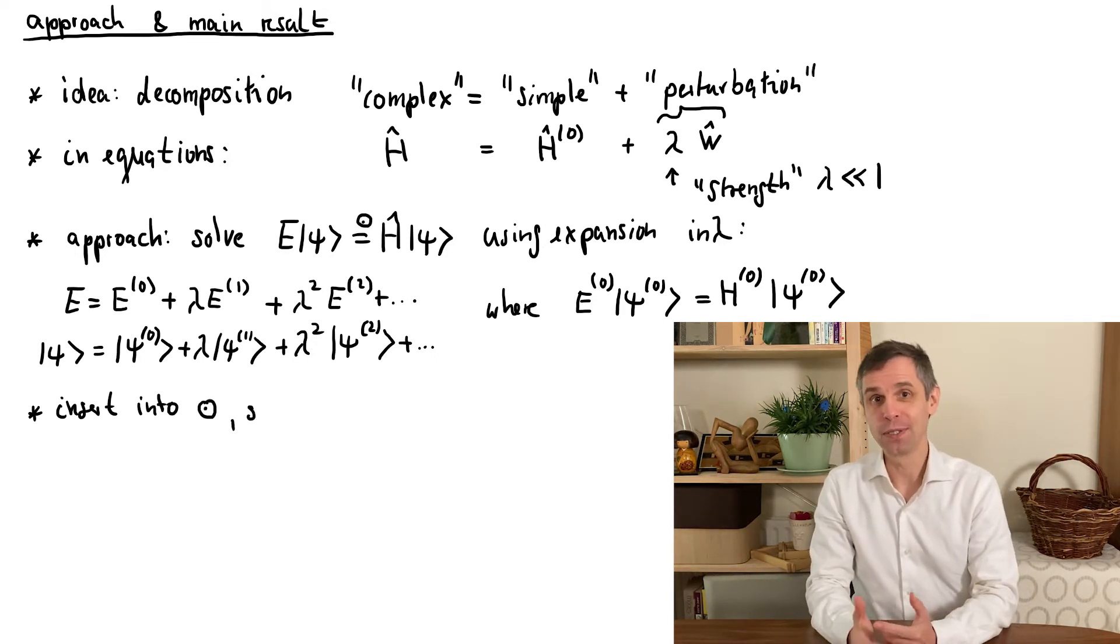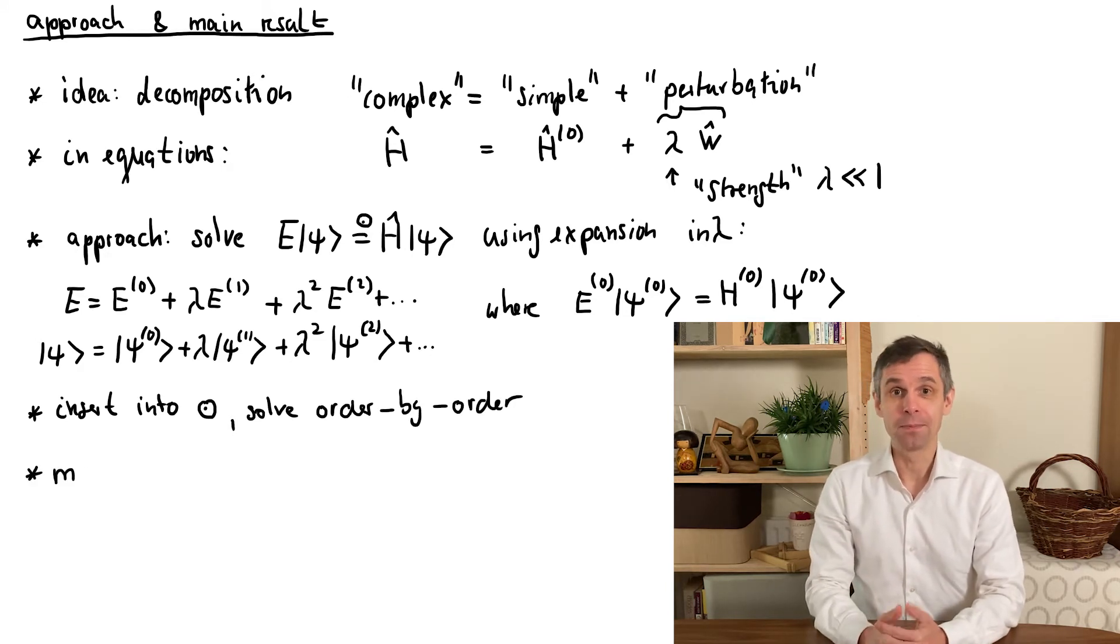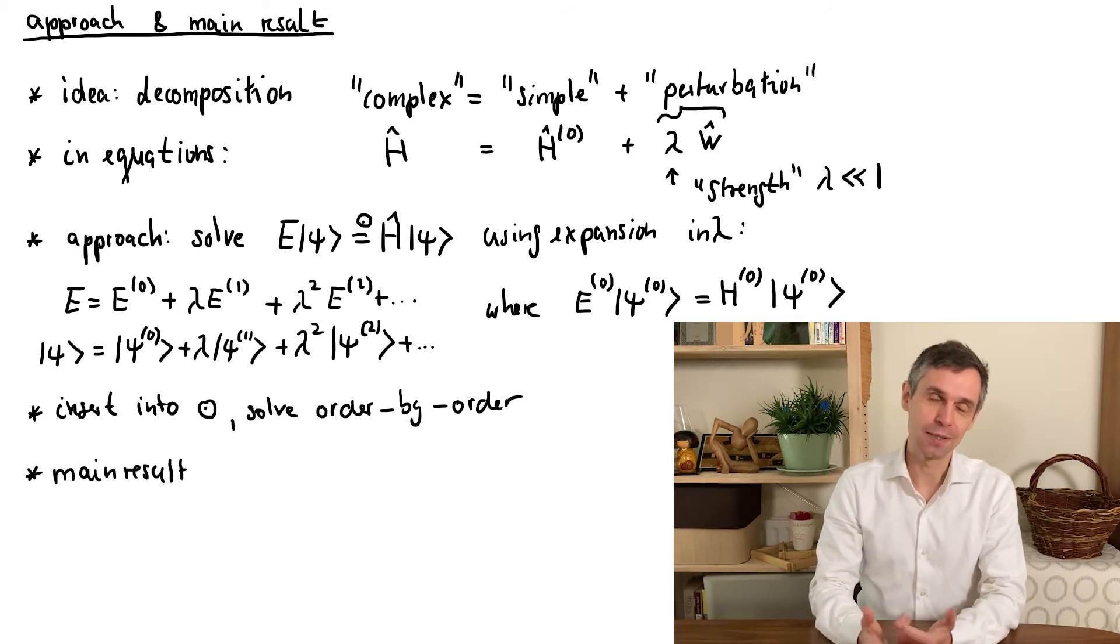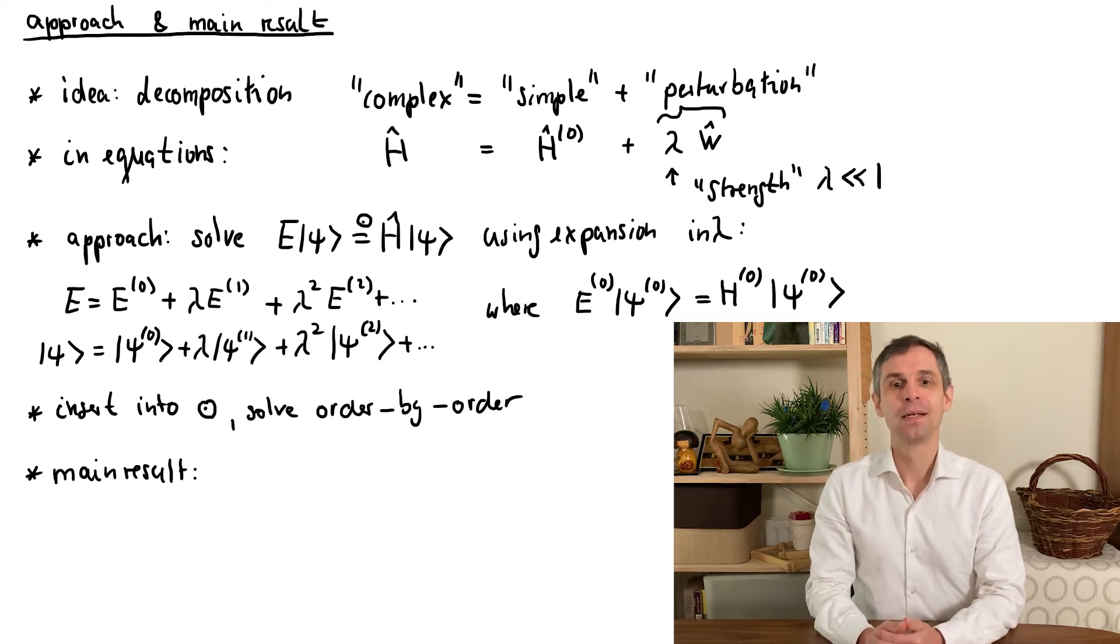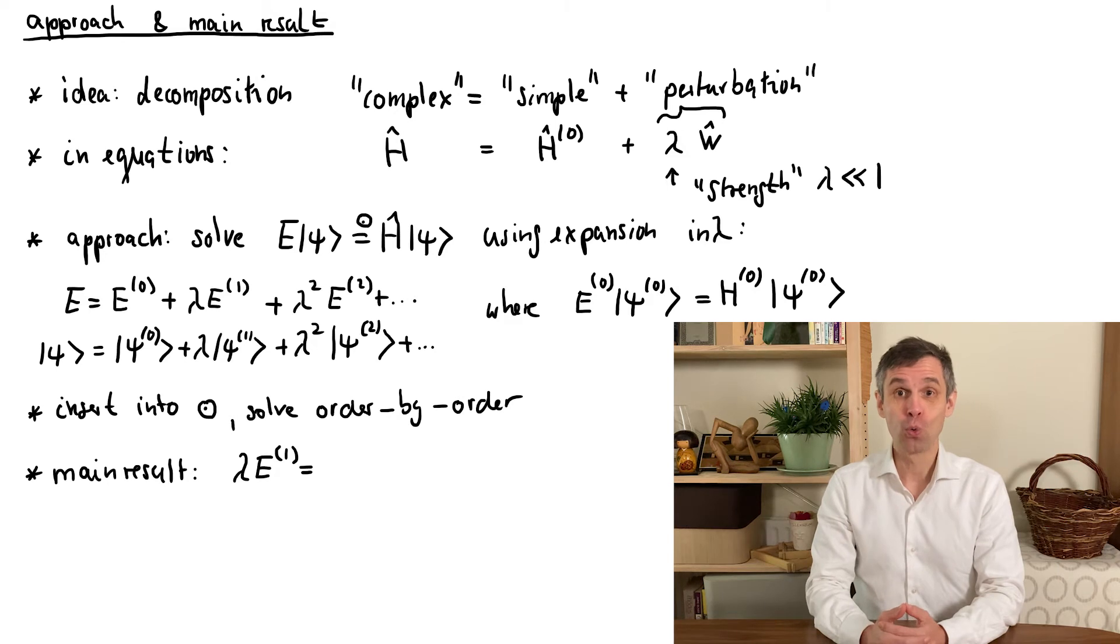I will show you the derivation in detail later, but let us first discuss the main result, which has a simple physical interpretation, as I'll also illustrate in a first example. This main result of perturbation theory is an expression for the leading term of the energy difference between the new and the old energies. We also call this difference the energy shift.